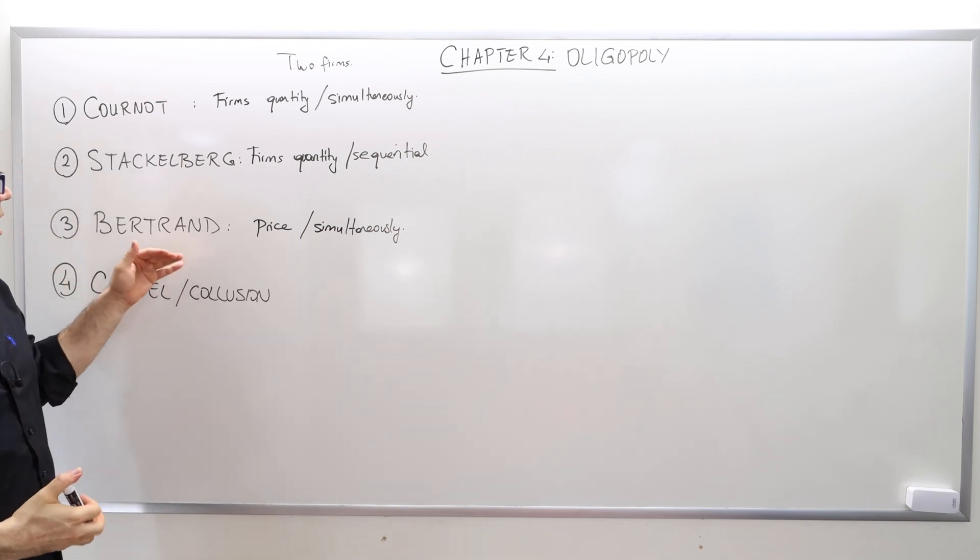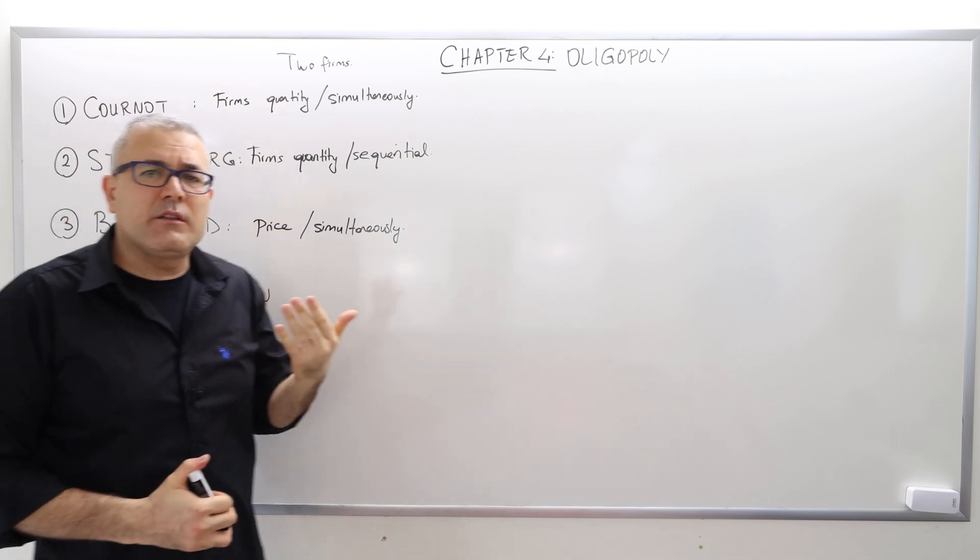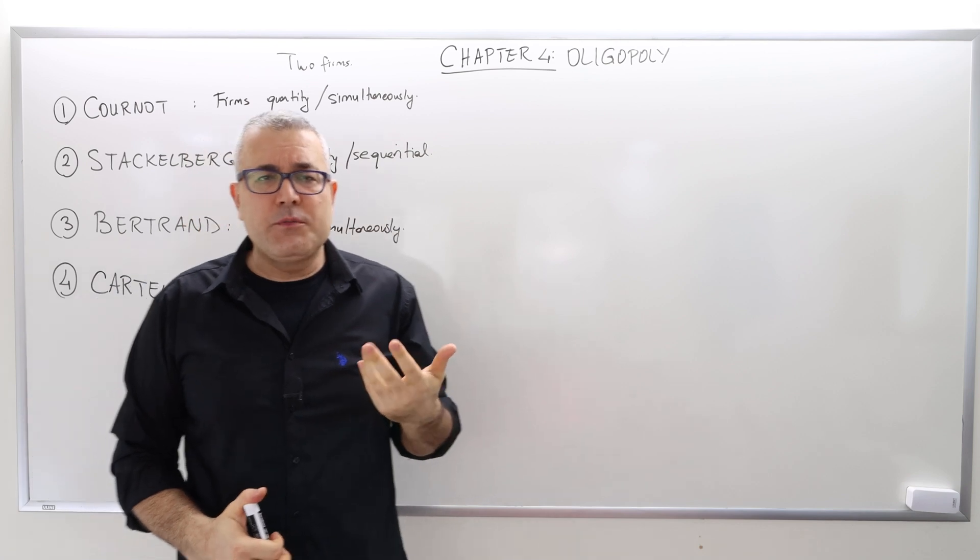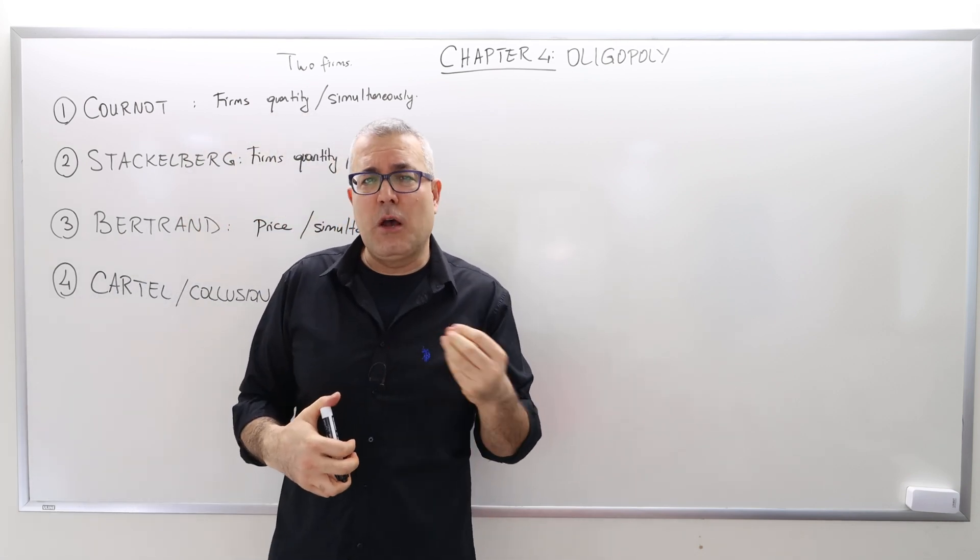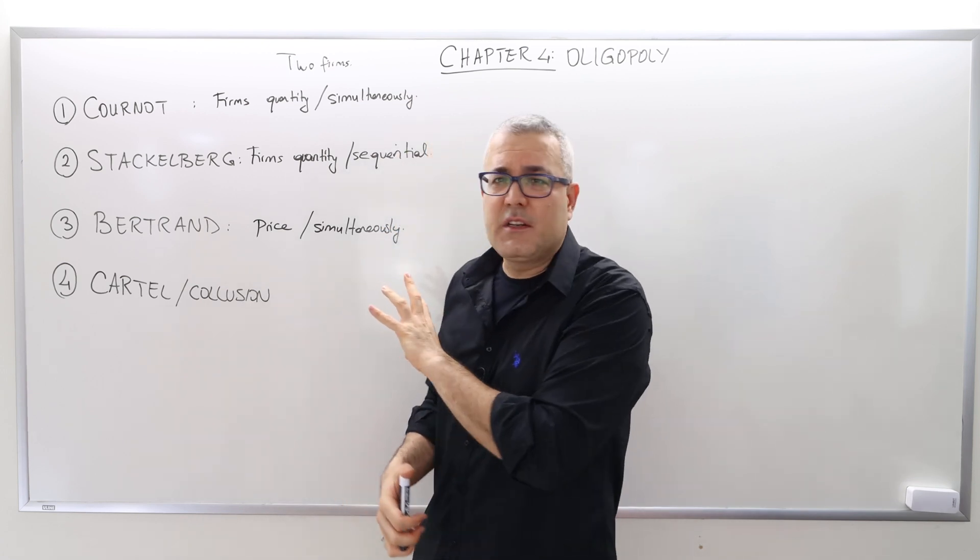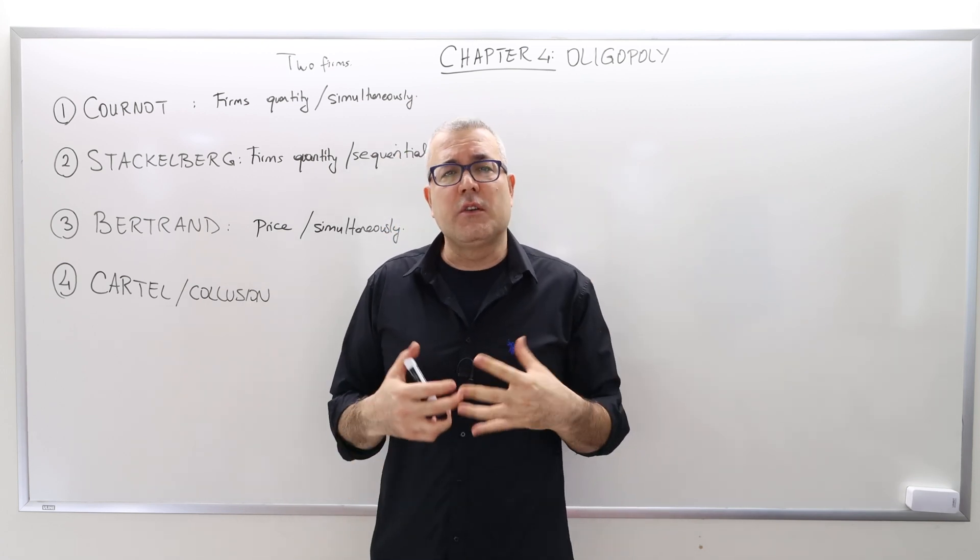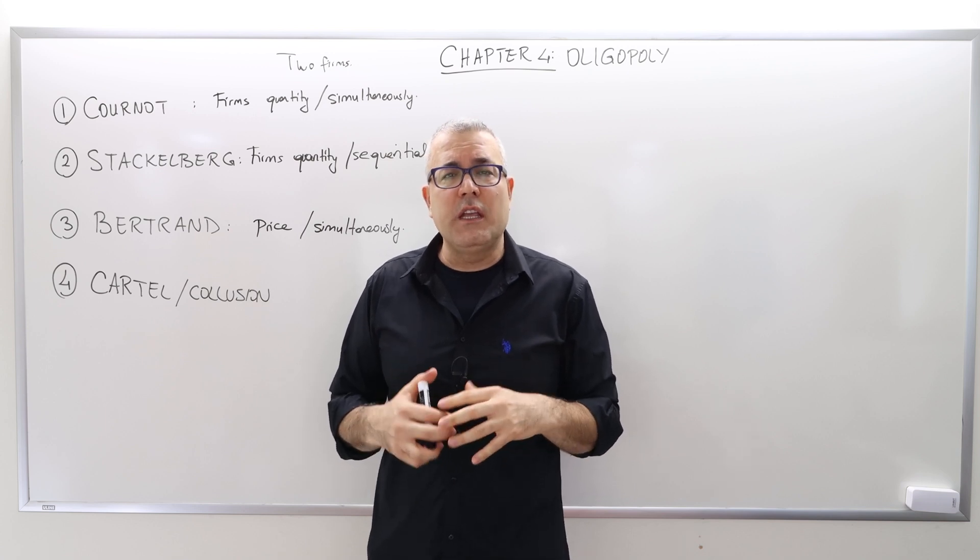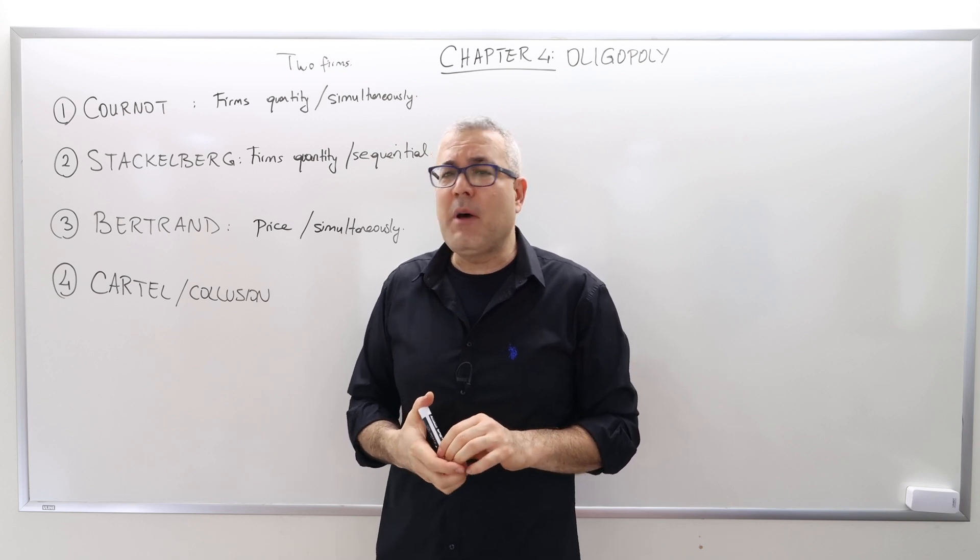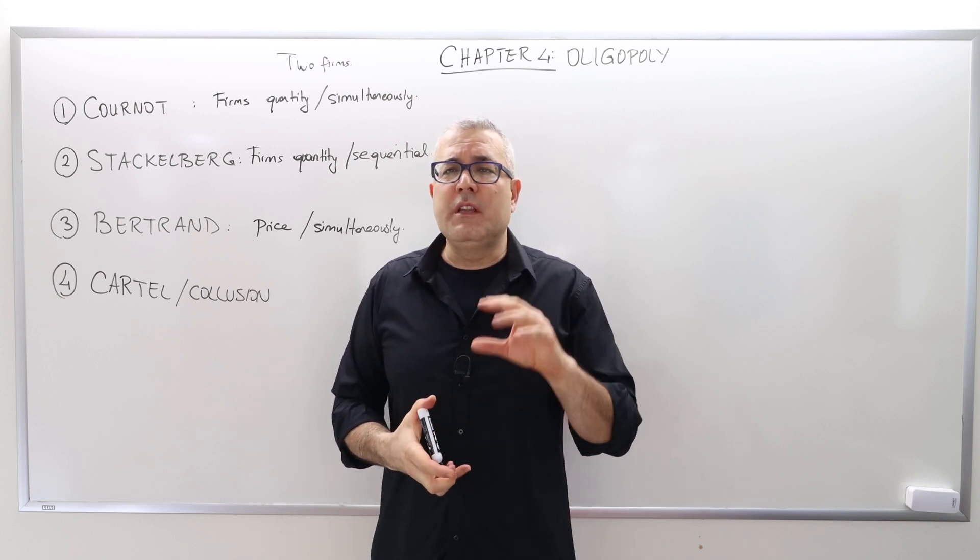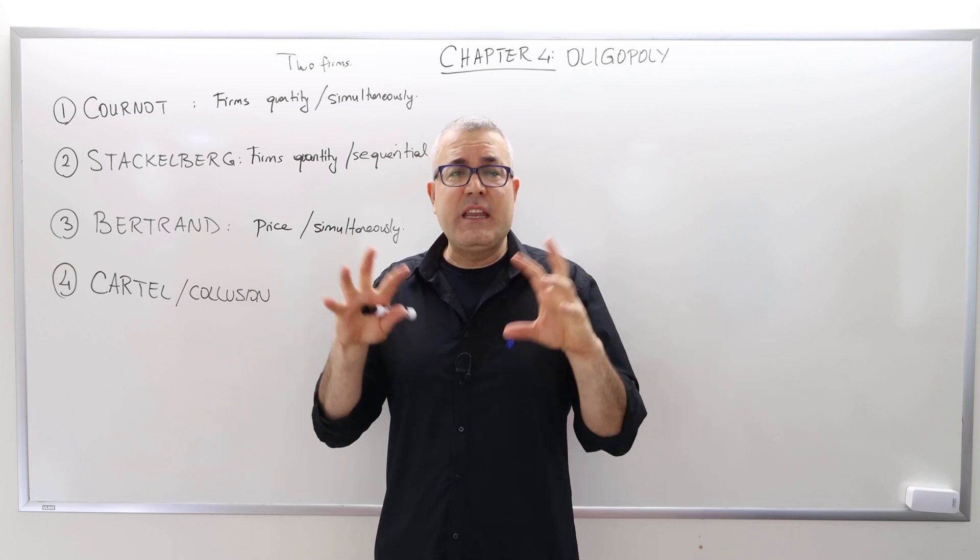You may wonder, why does the choice of price and choice of quantity matter? Aren't those models where the firms have some monopoly power? Yes, these are not perfectly competitive markets. There are two firms, so the firms have the power to influence the market price and the total quantity. However, the quantity and the price choices are not independent.